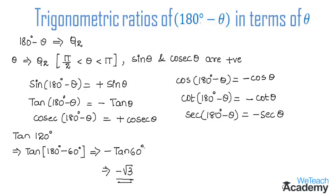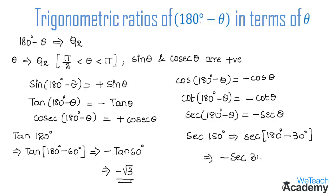Now let us find the value of secant 150 degrees. Secant 150 can be written as secant of 180 degrees minus 30 degrees. This is in the form of secant of 180 minus theta, which equals minus secant theta. So we get minus secant 30 degrees. Since the value of secant 30 degrees is 2 by root 3, we get minus 2 by root 3 as the value of secant 150 degrees.